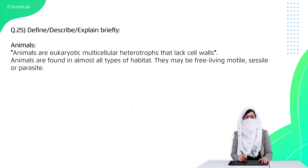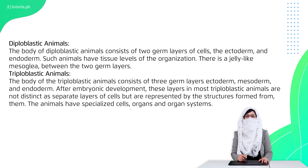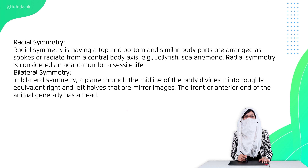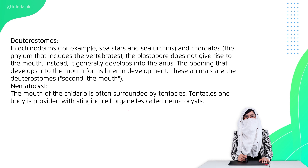Question 25 defines key terms. Animals are multicellular eukaryotic heterotrophs that take food by ingestion. Parazoa are multicellular but cells are not organized into tissues. Eumetazoa are animals with tissues and organ systems. Diploblastic animals have two germ layers with jelly-like mesoglea. Triploblastic animals have three germ layers. Radial symmetry means organs are equally distributed with no head or tail. Bilateral symmetry means left and right are mirror images. Coelom is a fluid-filled space between the body wall and mesoderm. Blastopore is an early embryonic structure. Protostomes create the mouth from the blastopore. Deuterostomes develop the anus from the blastopore.